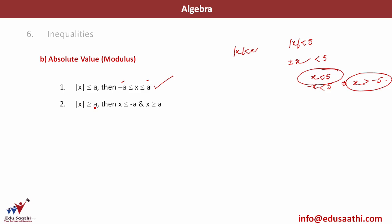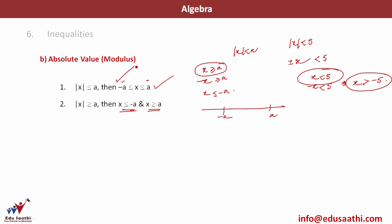If mod x is greater than a, I open it with a plus-minus sign: x greater than a and x less than minus a. So x is less than minus a or x is greater than a. In the first scenario the answer is between minus a and a; in the second scenario the answer is outside that range — less than minus a or greater than plus a.